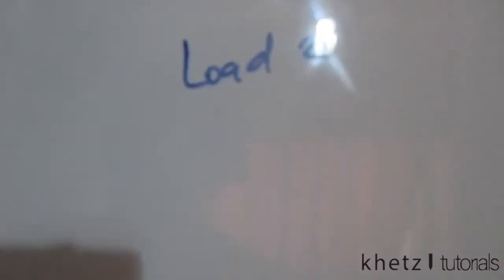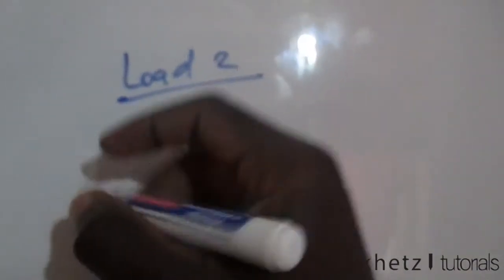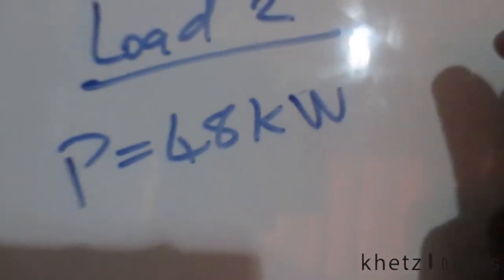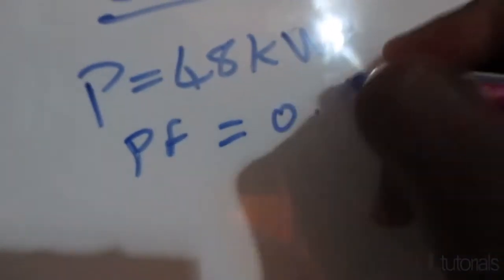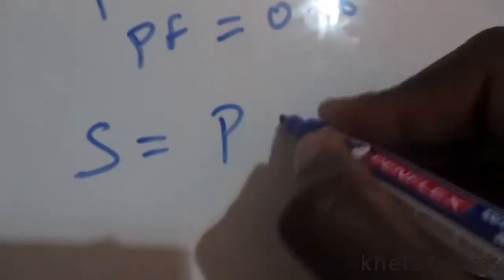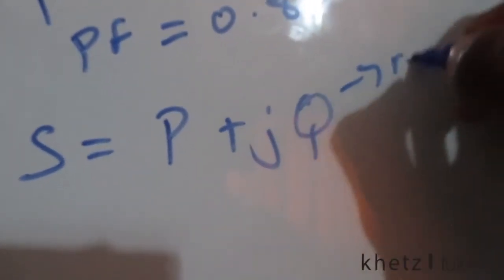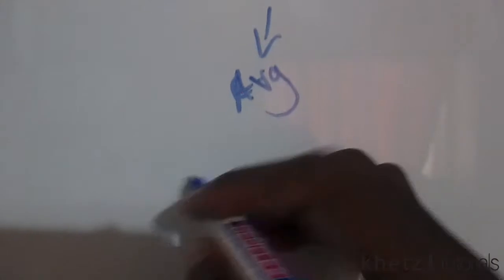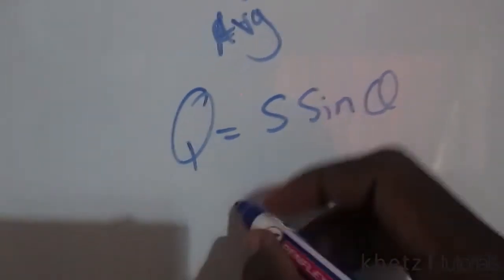Moving on to load two: we're given the average power of the motor, which is 48 kilowatts, and a power factor of 0.8 lagging. We already have the real power P. The complex power is P plus jQ, so our task is to find the reactive power Q. We know that Q equals S times sine of theta.